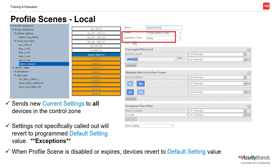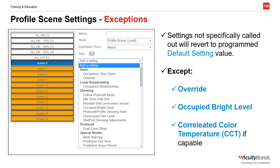Local profile scenes also give the ability to set an expiration time, adjustable from 5 minutes to 12 hours. After this time expires, devices will automatically revert to their programmed default settings. We've mentioned that settings not specifically selected from the dropdown will be told to revert to their programmed default value. This is true except for three settings that, if selected in the scene, will have immediate effects on the lights in the space. Since we likely wouldn't want the lights in a room to change dim values just because we want to change the time delay of an occupancy sensor, these three settings will remain unchanged if not specifically called out in the scene. These settings are: override, occupied bright level, and correlated color temperature, if applicable to the fixture.